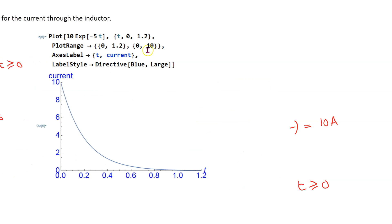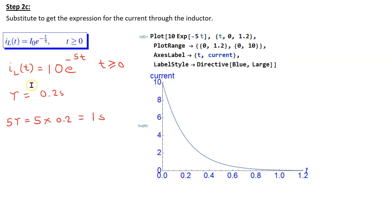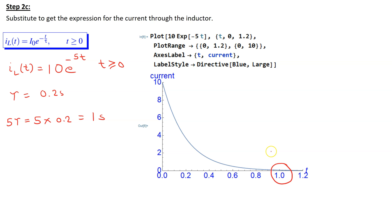We can use the plot command in Mathematica to plot this expression of the current through the inductor. The result is shown here. In this case, the time constant is 0.2 seconds. Therefore, 5 time constants is 1 second. We can see that the current starts at 10 amps and then exponentially decays to 0. And after 5 time constants have passed, the value of the current is approximately 0.